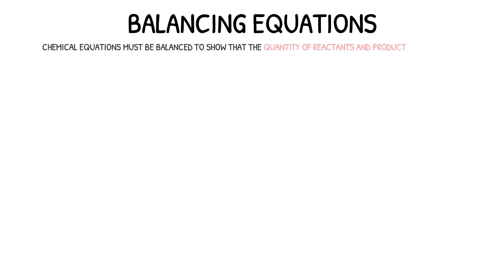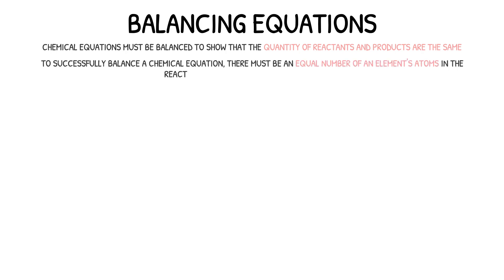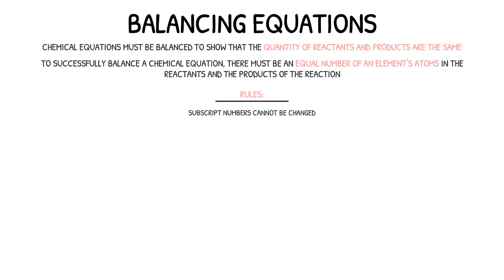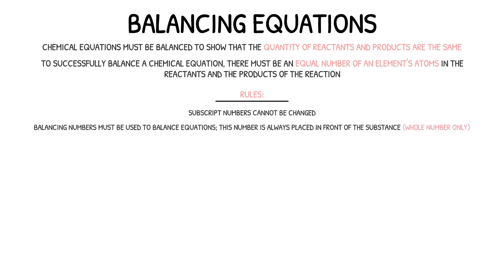As a result of the law of conservation of mass, we must balance chemical equations to show that the quantity of reactants and products in a chemical reaction are the same. To successfully balance a chemical equation, there must be an equal number of each element's atoms in the reactants and in the products. There are two very important rules: firstly, the subscript numbers in the formula for a substance must not be changed — if these are changed, the substance itself will change. Instead, you must use balancing numbers, which are placed in front of the substance and must be whole numbers only.